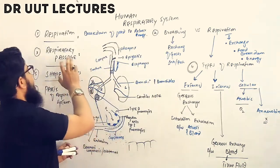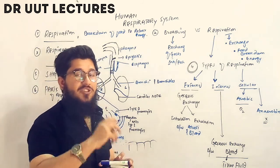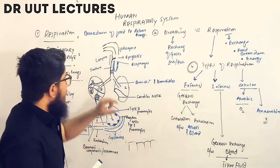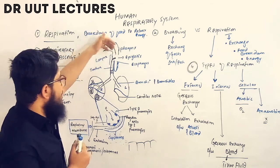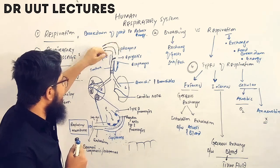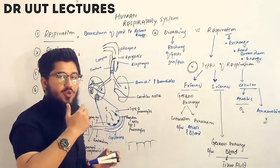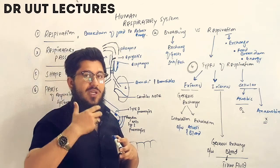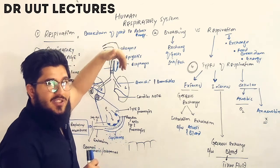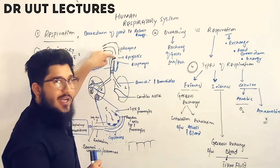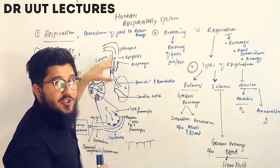Now let's discuss the respiratory passage — the path followed for respiration. It starts from the nostrils and mouth, where we inhale. Oxygen travels through the pharynx, then the larynx, where we have the epiglottis. The epiglottis plays an important role: since we both eat and breathe through the mouth, if a large food particle enters, the epiglottis closes the tracheal tube.